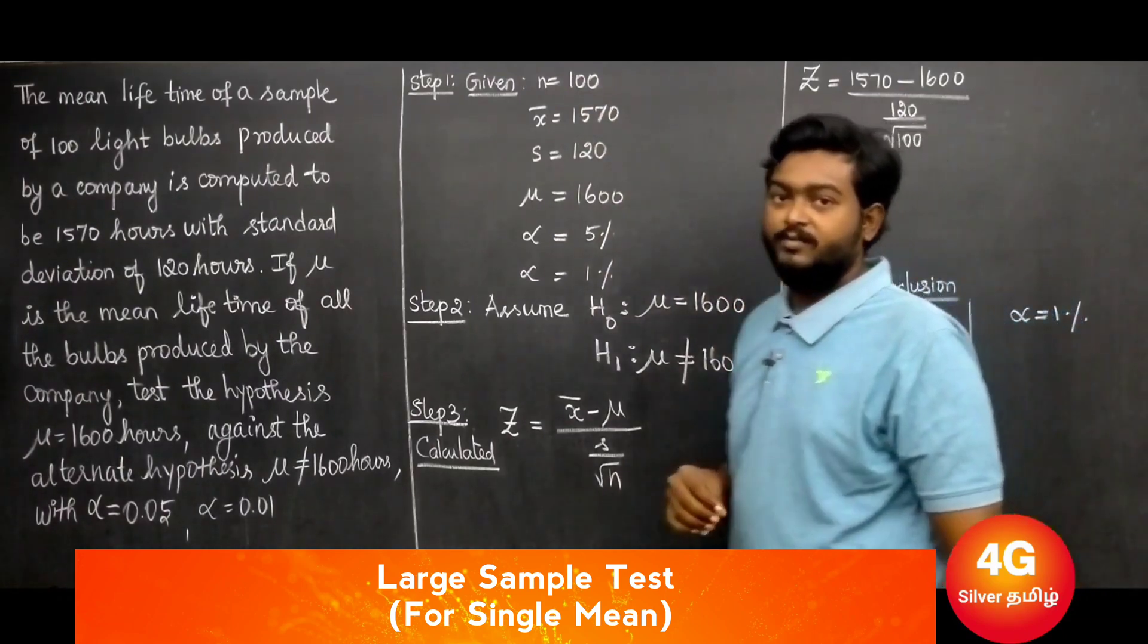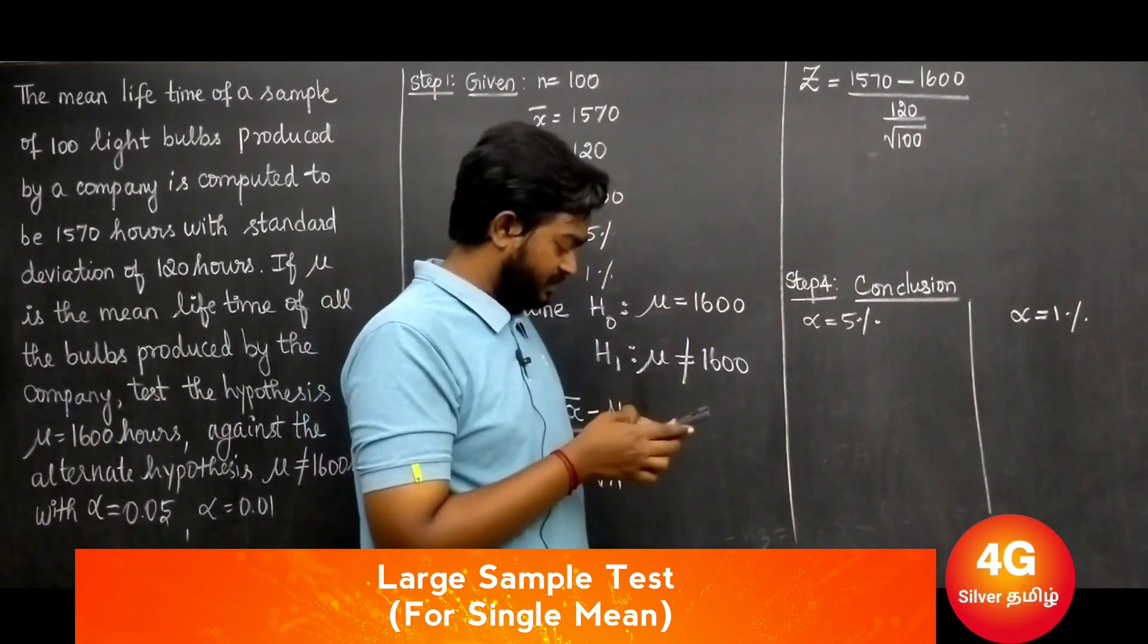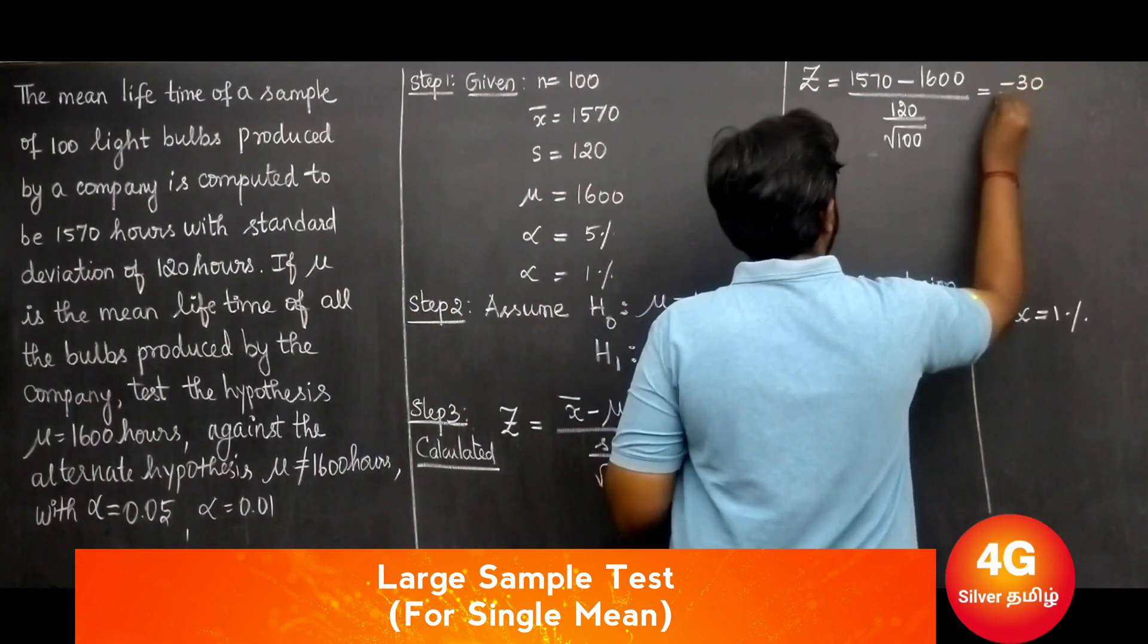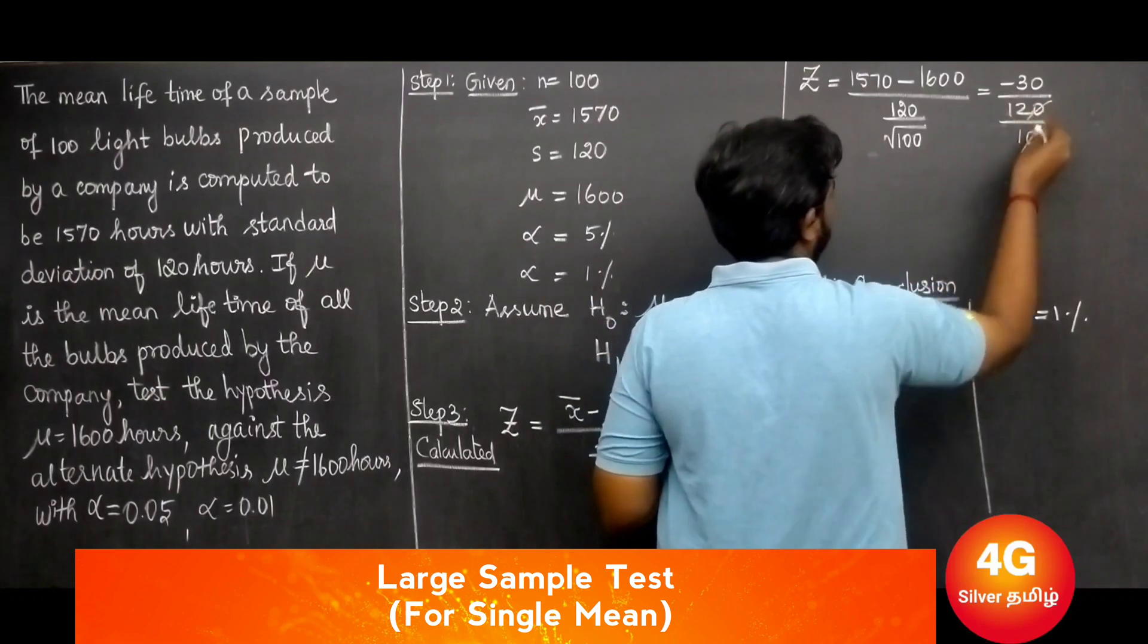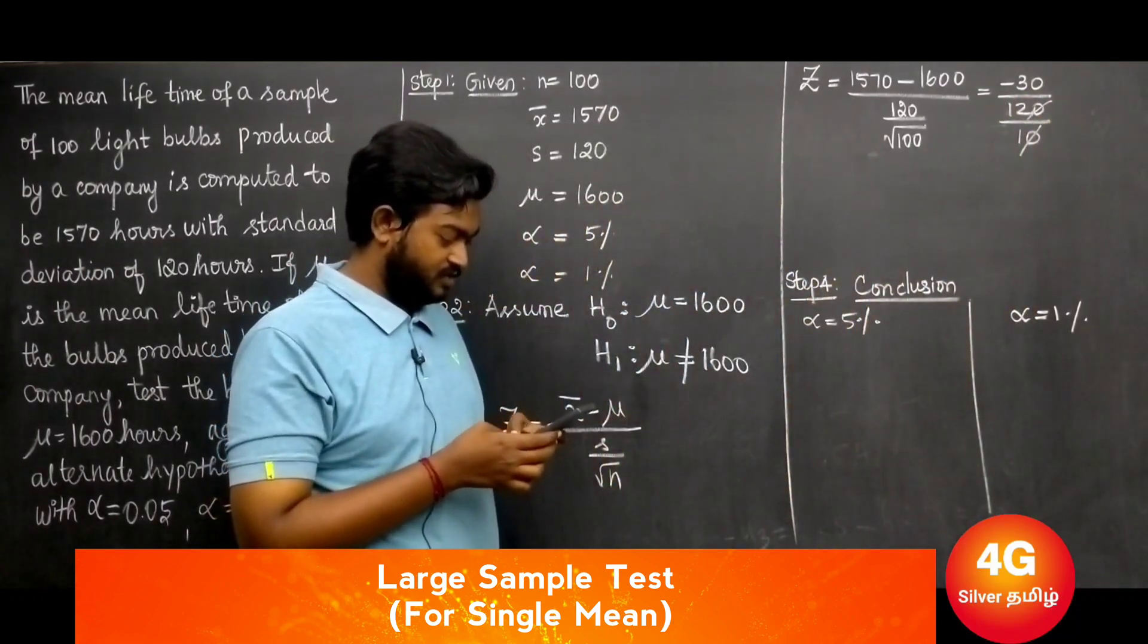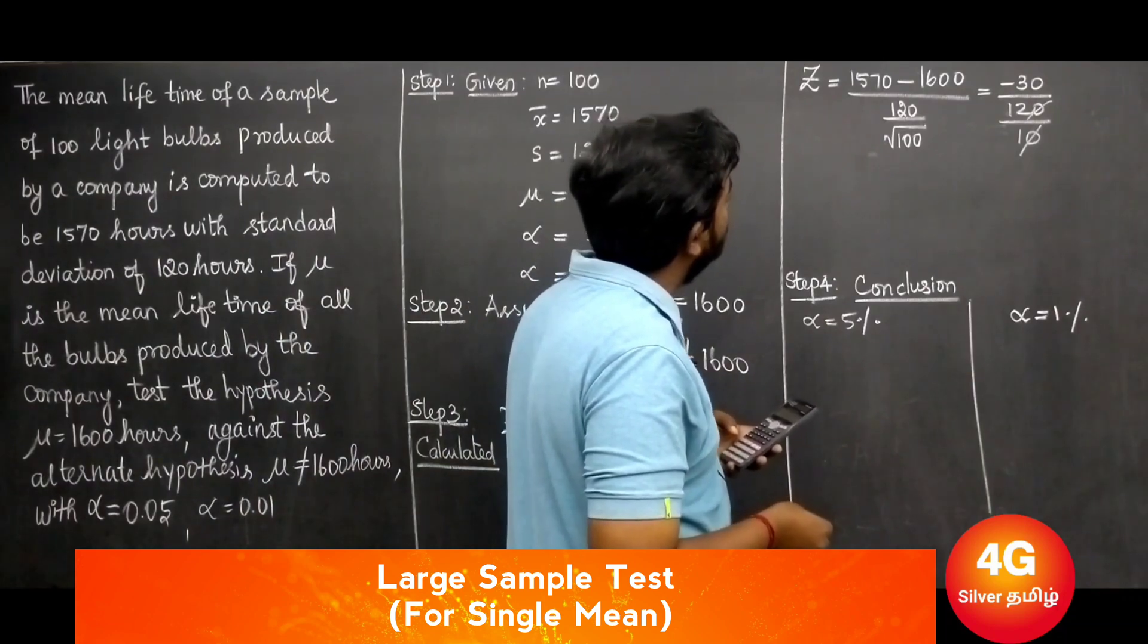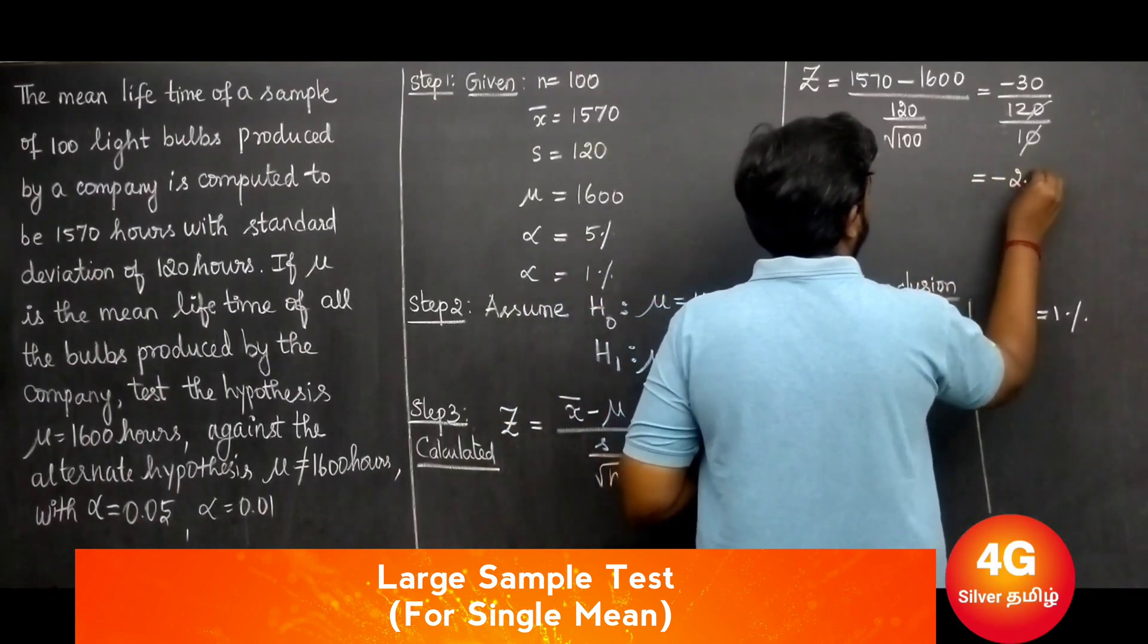Divided by 120 over square root of 100. Calculating: 1570 minus 1600 gives minus 30. Minus 30 divided by 120 over 10 simplifies to minus 30 divided by 12.